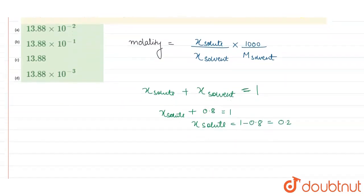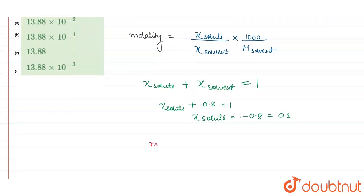Now let us put these values in the formula. Molality equals to mole fraction of solute, which is 0.2, divided by the mole fraction of solvent, which is 0.8, into 1000 divided by the molar mass of solvent. Our solvent is water, and the molar mass of water is 18, so we will put 18 here.